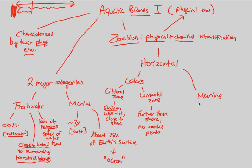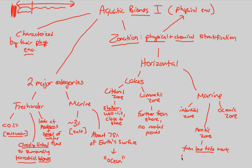In the marine biome, there are a few different horizontal zones to remember: the intertidal zone, the neritic zone, and the oceanic zone. The neritic zone runs from the low tide mark to the edge of the continental shelf — I'd highly suggest looking at the textbook figure for this, as it's very helpful. The oceanic zone is simply open water.